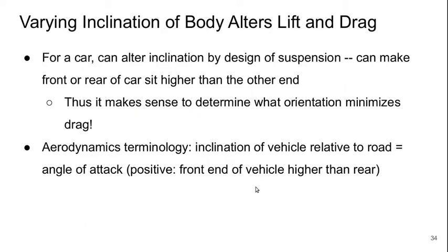If we change the inclination of the body relative to the flow, this is going to alter both the lift and the drag. For a car, we can alter that inclination through the design of the suspension — we can make the front or rear of the car sit slightly higher than the other end. It makes sense to determine what orientation will minimize the drag. That inclination relative to the road is what we call the angle of attack, so at a positive angle of attack, the front end of the vehicle will be higher than the rear.